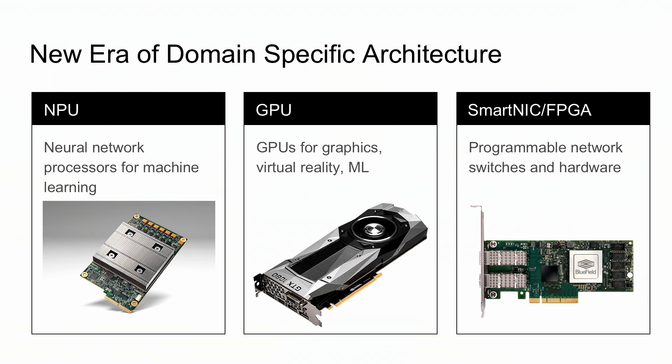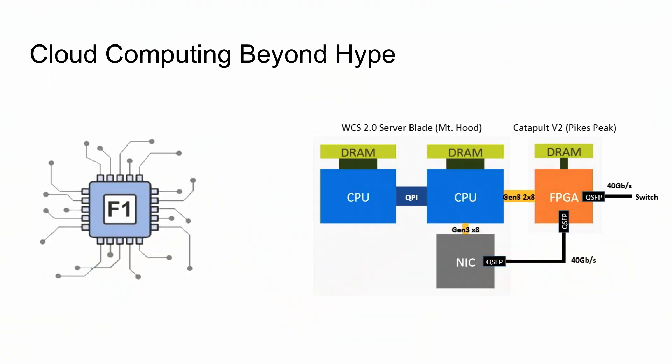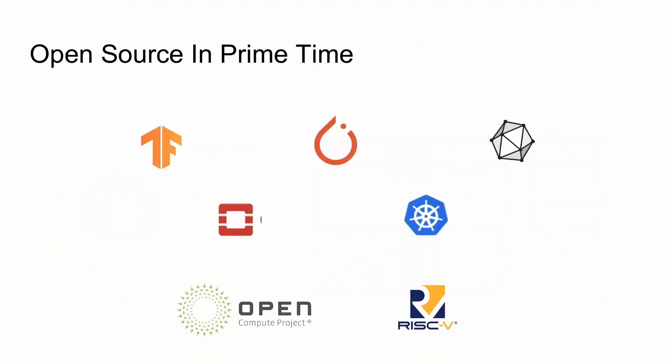Domain-specific accelerators is definitely becoming an inevitable trend, and cloud computing is everywhere. Now you offer anything through cloud — we're seeing AWS F1 instances offering FPGA, and Azure has the Catapult infrastructure which heavily utilizes FPGA to power the cloud. Open source is also in prime time; you can build an open source cloud infrastructure from the ground up if you have capable developers.